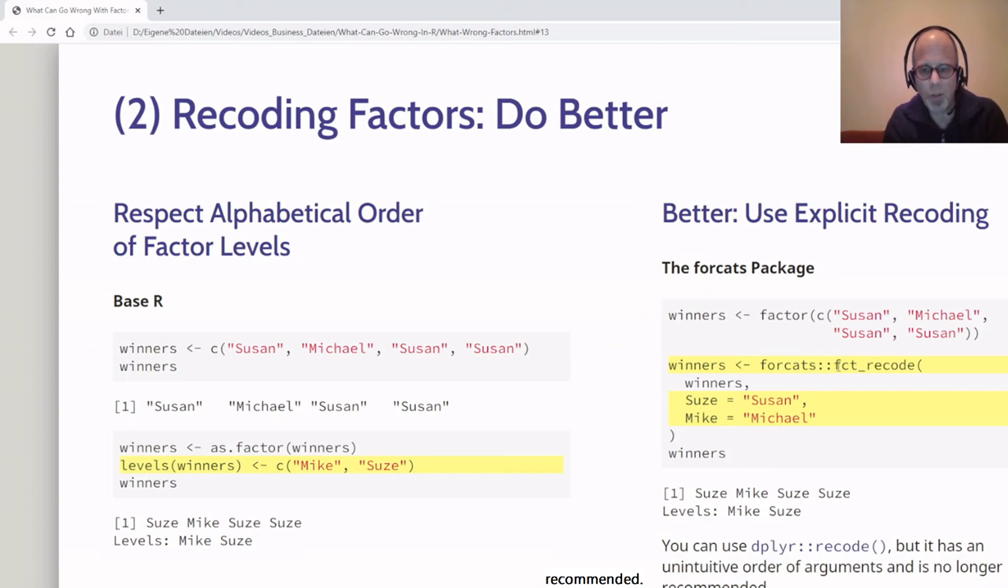A lot of the functions in the forcats package start with fct_. So if you just take away from this video to use forcats and you're not sure what the functions are called that you're looking for, you can use RStudio's context menu and type question mark fct_ and you get a context help menu that lists all the functions starting with fct_ that you can use to deal with factor levels. In this case we use the fct_recode function from forcats, and you see what I mean by explicit recoding. Here it's more readable and less error-prone, I think, because using this named vector notation, I say that Zeus is supposed to replace Susan and Mike is supposed to replace Michael. Here I don't have to worry about the order. I can start with Zeus, don't need to think about the alphabet, and it's less likely to make mistakes this way. The result is the same as on the left side—Zeus won three of the games and Mike only won the second game, as should be the case.